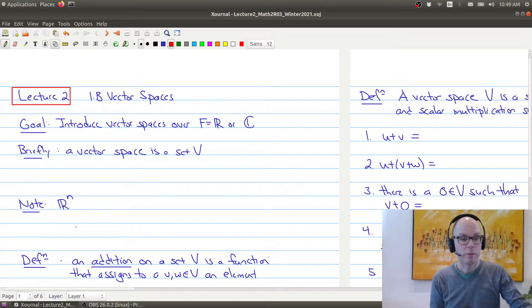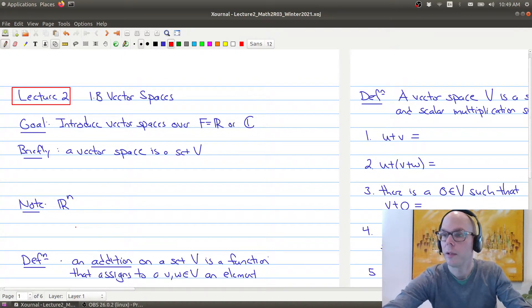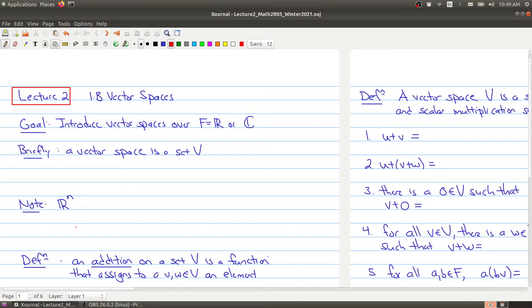Okay, let's talk about vector spaces. Our goal here is to introduce vector spaces over either the real numbers or the complex numbers. These are sets we introduced last time. Briefly, what you want to think about is a vector space is a set V with two operations, and these operations have to satisfy some special properties.